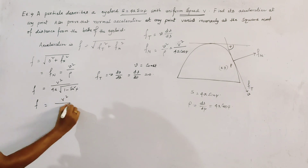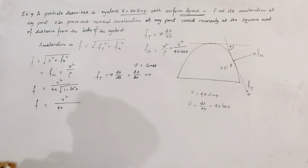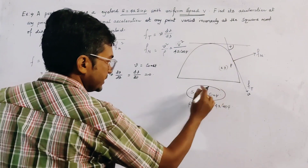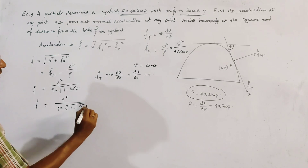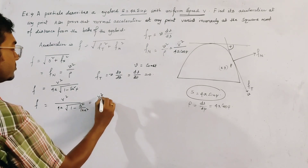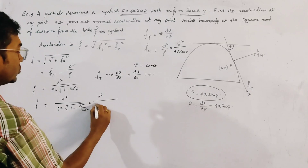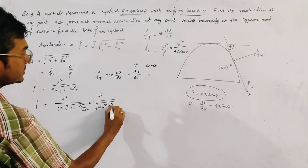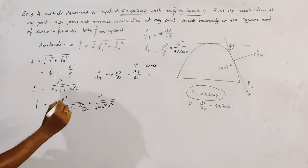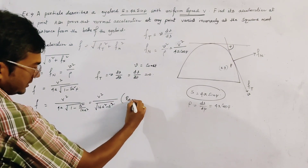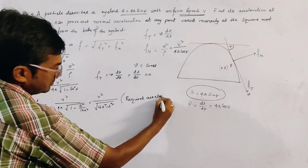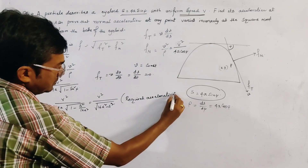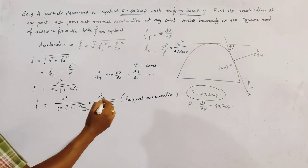Since sin ψ = s/4a, we substitute to get fn = v²/(4a) divided by √(1 − s²/16a²), which simplifies to v²/√(16a² − s²). And this is the required acceleration at any point — this is our first result.